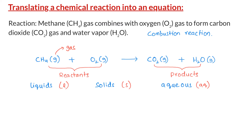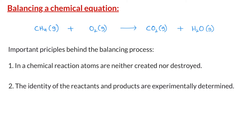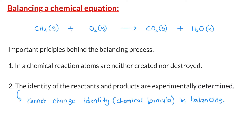The equation is called an unbalanced chemical equation. An unbalanced chemical equation is of no use in terms of solving a stoichiometry problem. Therefore, the next step is to balance the equation. There are two important principles behind the balancing process. First, in a chemical reaction, atoms are neither created nor destroyed; therefore, all the atoms on the reactant side must be present on the product side. Second, the identities of the reactants and products are experimentally determined, so the formulas of the chemical compounds must never be changed when balancing a chemical equation.